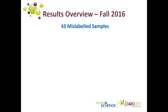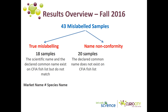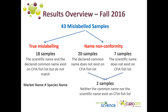Let's look more closely at the 43 samples that were mislabeled. Eighteen samples were truly mislabeled — although the scientific and common names for the fish were on the CFIA fish list, the market name did not match the species name determined through DNA barcoding. As for the other mislabeled samples, 20 had common names that were not on the CFIA fish list, 7 had scientific names not on the list, and 2 samples had neither their common name nor their scientific name on the CFIA fish list.